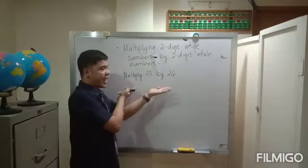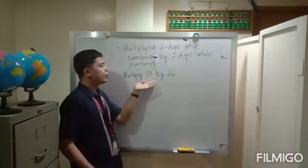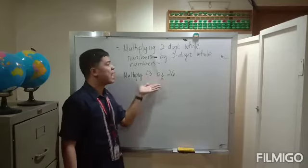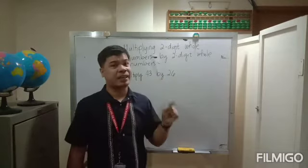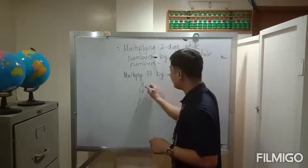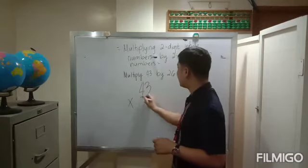Now let us start our discussion. As you see here on the board, we have multiply 43 by 26. For this problem, we need to rewrite this in columns, so we have 43 times 26.